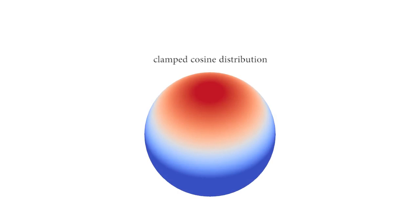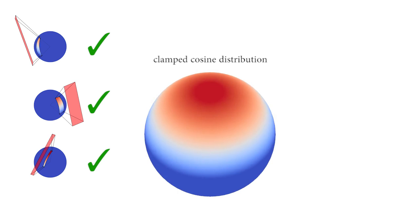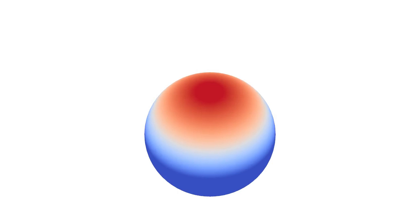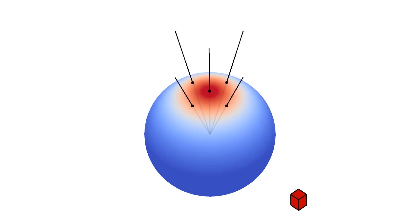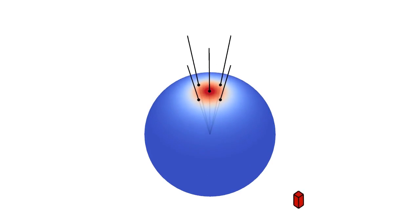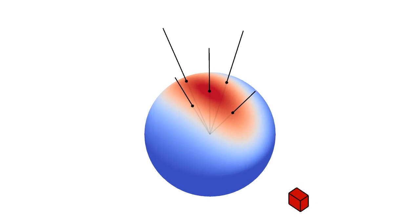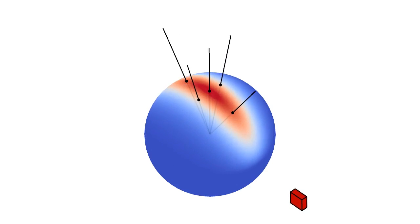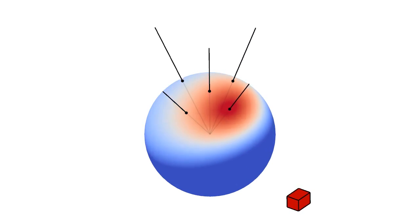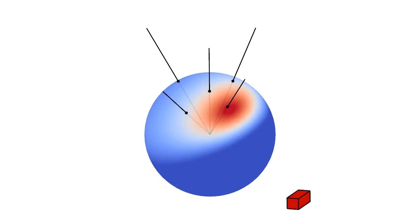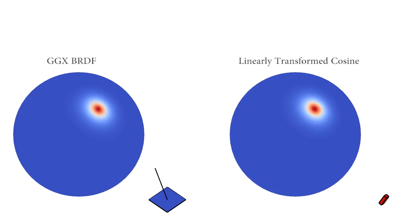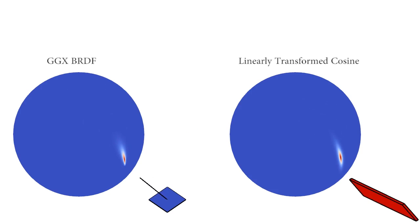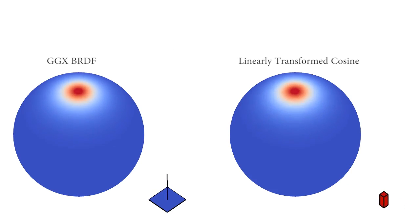In our paper, we study the clamped cosine distribution, whose analytic integration properties over spherical polygons are known since the 18th century. We show that linearly transformed cosines can produce a wide range of spherical shapes, including anisotropy as well as skewness. They provide a good approximation to isotropic GGX BRDFs.